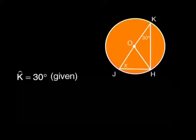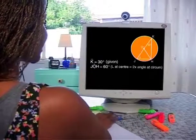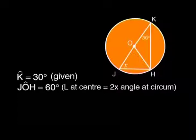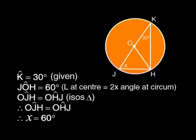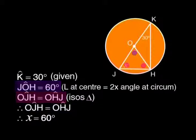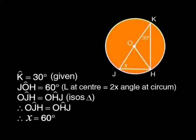What about this one? Angle K is 30 degrees and it's at the circumference, so angle JOH would be 60 degrees because it's at the center. OJ and OH are radii of the circle, so triangle OJH is isosceles. We know that JOH is 60 degrees and the other two angles are equal to each other. Angles in a triangle add up to 180 degrees, so angle J and angle H together add up to 120 degrees, meaning they must both be 60 degrees.